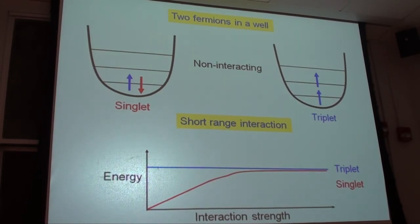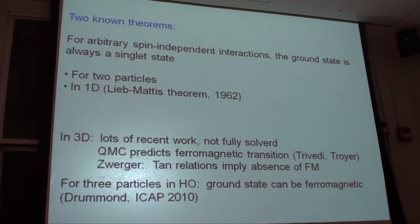It's a general theorem that for arbitrary spin-independent interaction, the ground state is always a singlet state. That's true for two particles. That's true even for the generalization of an arbitrary number of particles in one dimension. This is a celebrated Lieb-Mattis theorem, which has been known for 50 years.